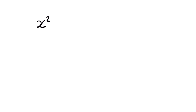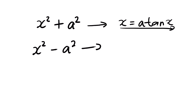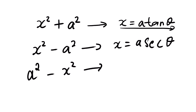This is what you should know: for x squared plus a squared, we are going to let x equal to a tan theta. For x squared minus a squared — the difference of two squares — we let x equal to a secant theta. Then when we have a squared minus x squared, this is the same as letting x equal to a sin theta.